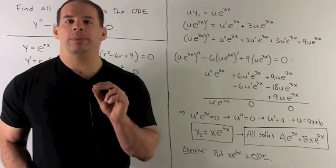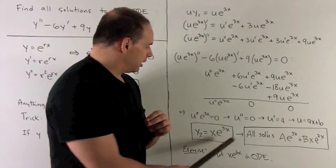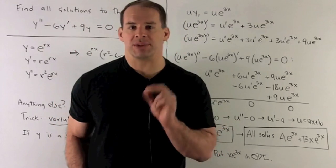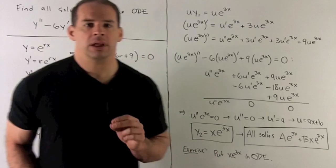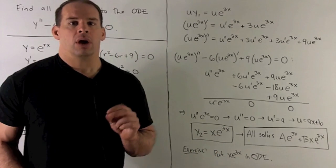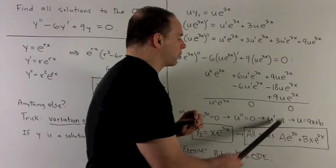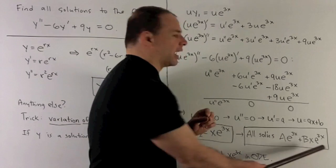Now, if you note, we should check this in our ODE. So you should stick that in here. Make sure that zero comes out. Now, this is going to mean all of our solutions are going to be linear combinations of e to the 3x and x e to the 3x.